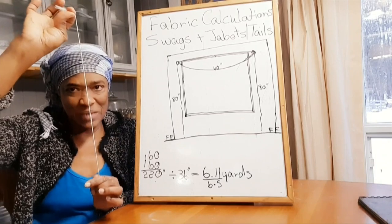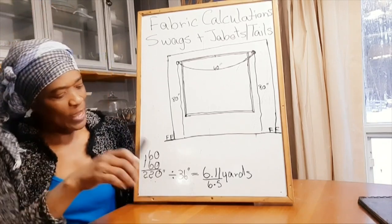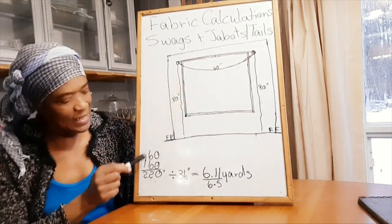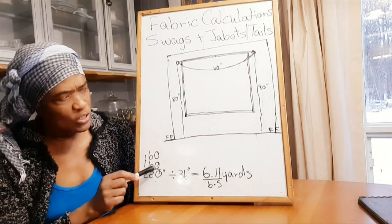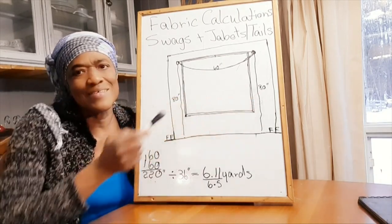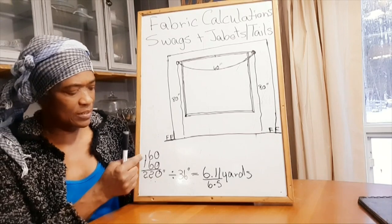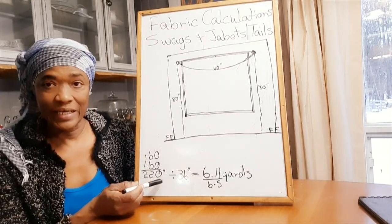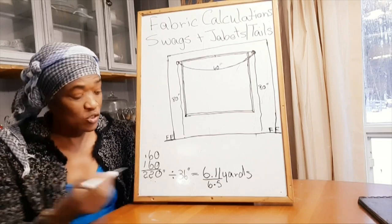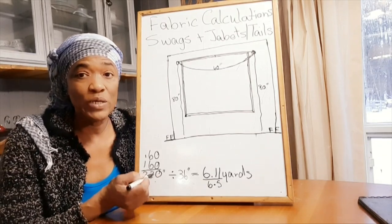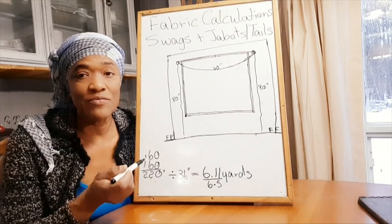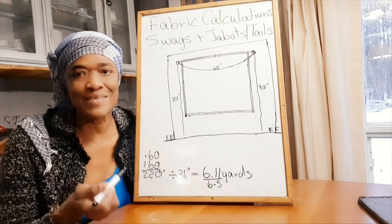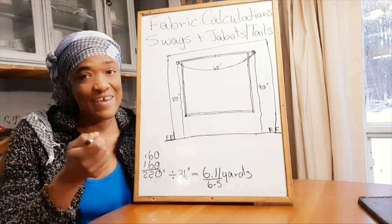Okay, so we add them. So it's 60 plus 160, because two 80s are 160, so it's 60 plus 160, it's going to be 220. And then that's 220 inches, so what we do next is divide by 36 because there are 36 inches in a yard.